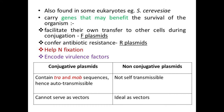F plasmids are transferred from one bacterial cell to another because they contain certain genes that enable them to be transferred during conjugation. However, these properties are not of much importance when using plasmids as vectors — only the antibiotic resistance property will be important because it can be used as a marker.